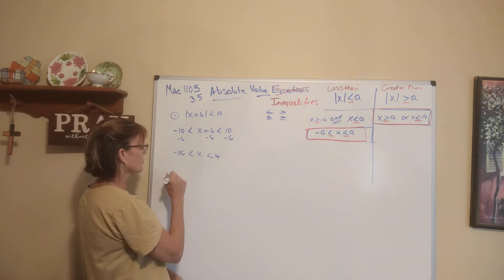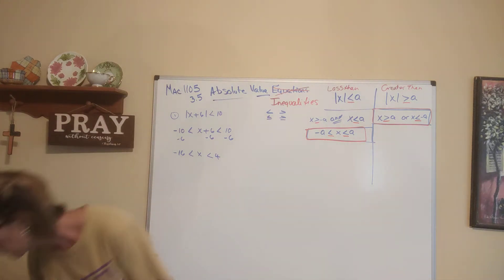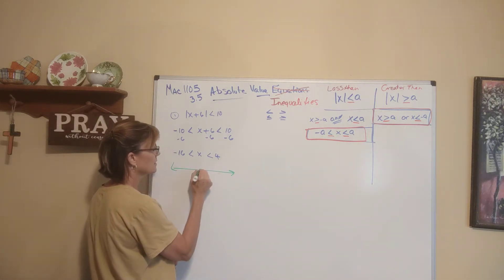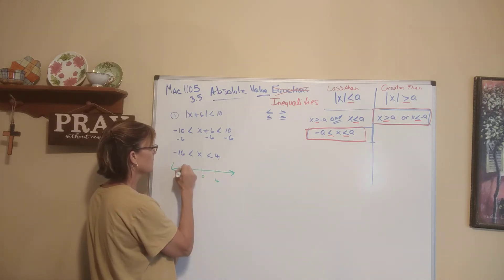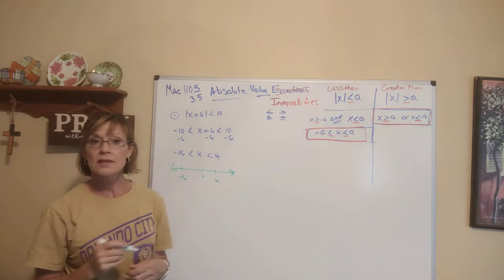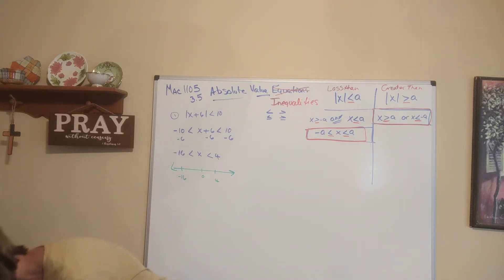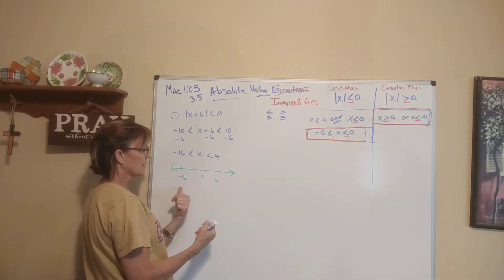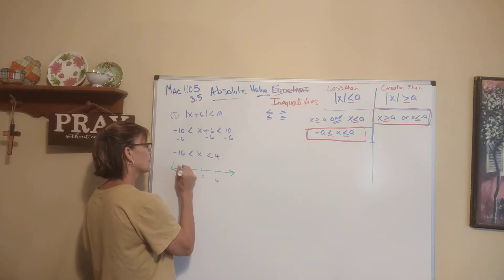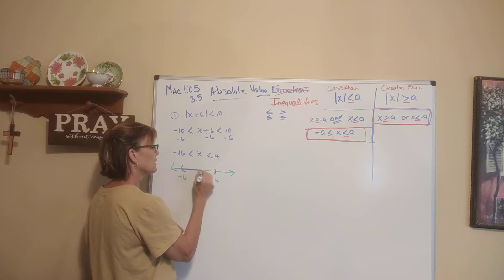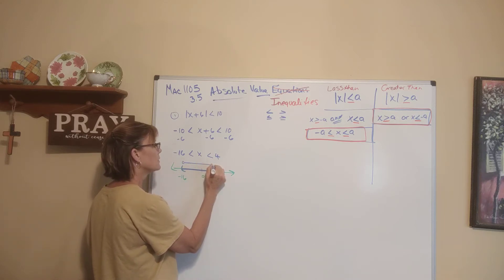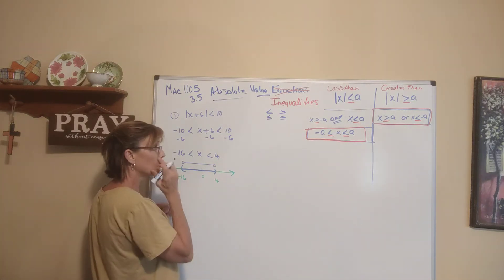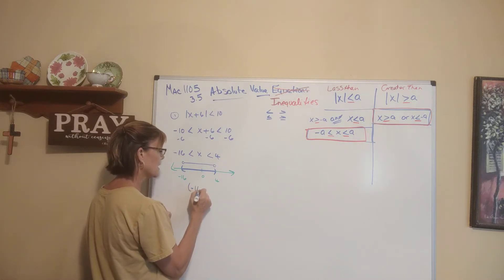I can graph this. If this is my number line, with 0, 4, and negative 16 marked — note that this is not to scale — my solution is x between negative 16 and 4. I'll use parentheses, which means open circle. In interval notation, it would be negative 16 to 4. That is example 1.